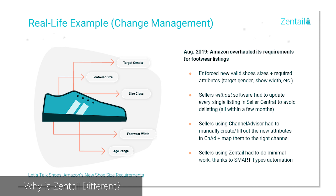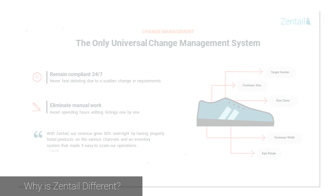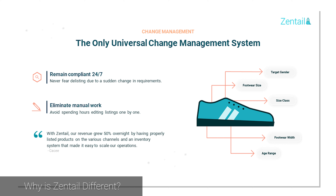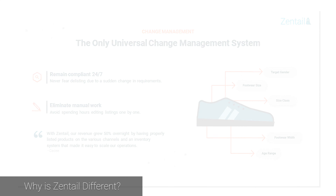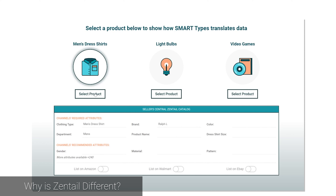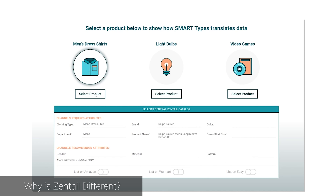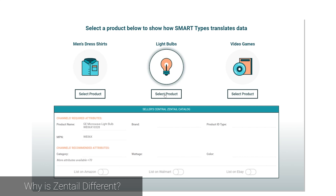The biggest challenge of any multi-channel software is being able to manage all of your listings for a product across all of your channels as one central listing. Every channel has hundreds or thousands of attributes with their own valid values, as well as hundreds or thousands of categories. Zentail is the only system in the world that can actually deliver on this. Our smart type system understands exactly what attributes are relevant to a specific type of product and how to get the highest quality data into each channel in their language — and it's pre-configured so you don't have to create a single mapping yourself.